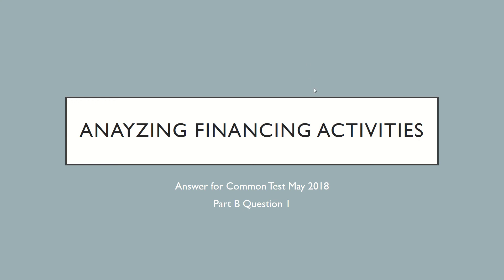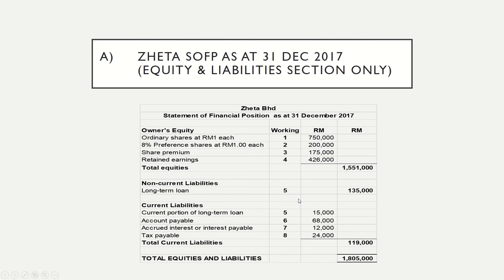This is a discussion for answer Part B, Question 1 from Common Test May 2018. Let's look at Requirement A. You need to prepare Zita Berhad's Statement of Financial Position as at 31st December 2017 — equity and liability section only.